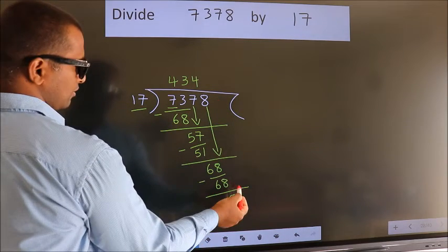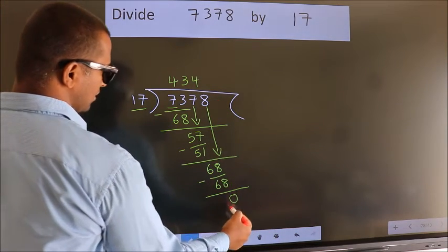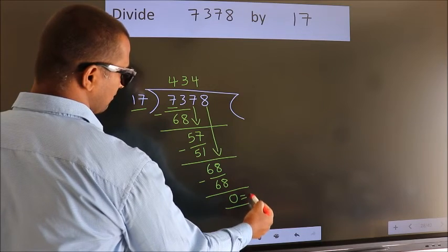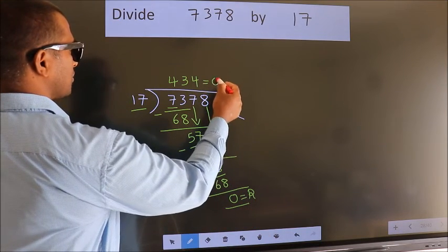No more numbers to bring down. So we stop here. This is our remainder. This is our quotient.